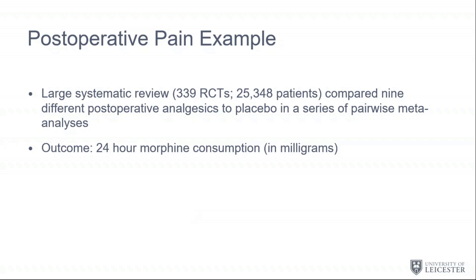The review considers treatments for post-operative pain relief — 339 trials comparing nine different analgesics to placebo in a series of pairwise network meta-analyses. One thing we're taught about pain trials is that there's a lot of subjectivity in pain measurements, though the trials often use a fairly objective measure that seems to be in common usage.